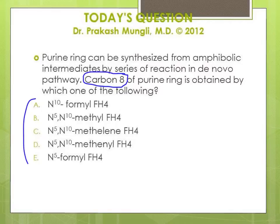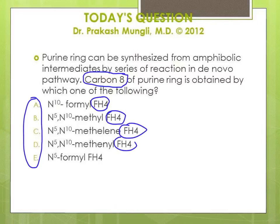The question is specifically asking which donor contributes to carbon 8 in the purine ring. All the choices from A to E are one-carbon metabolic derivatives of tetrahydrofolate. All of the molecules given are tetrahydrofolate derivatives: N10-formyl THF, N5N10-methyl THF, N5N10-methylene THF, N5N10-methanyl THF, and N5-formyl THF.